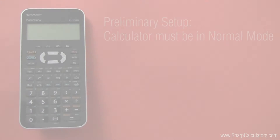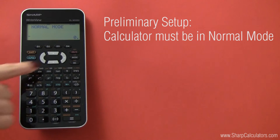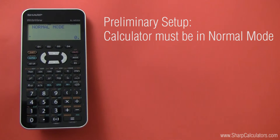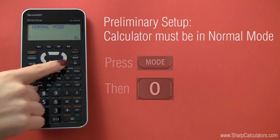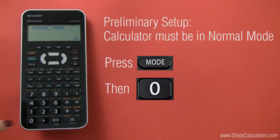To calculate roots, your calculator needs to be in the normal mode. To put your calculator in normal mode, press Mode, then 0.